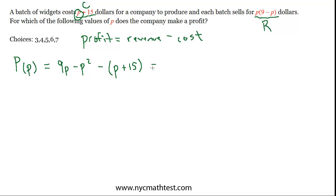And then let's just simplify this algebraically. We have, I'm going to put the highest order term first, minus P squared, and then we'll have 9p minus P, which is plus 8p. And then we have minus 15, if you distribute the negative. So that is our profit function.